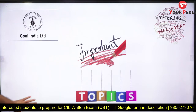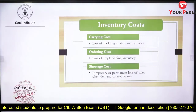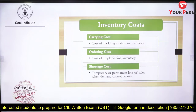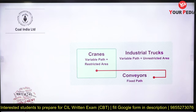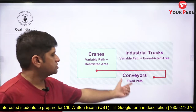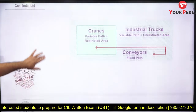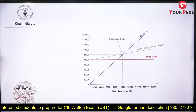The most important topics for the Coal India Limited material management exam start with inventory costs. Inventory cost is categorized as carrying cost, ordering cost, and shortage cost. Questions like 'which cost is storage-related?' — the answer is carrying cost or holding cost. Questions are also asked about material handling devices: manual handling, cranes, industrial trucks, conveyors — for example, which is best for a fixed path? The answer is conveyor.